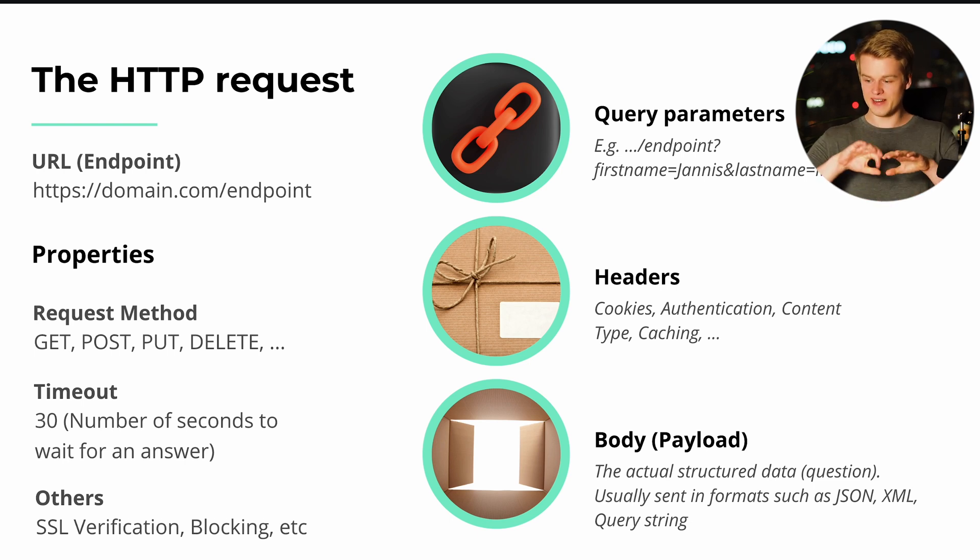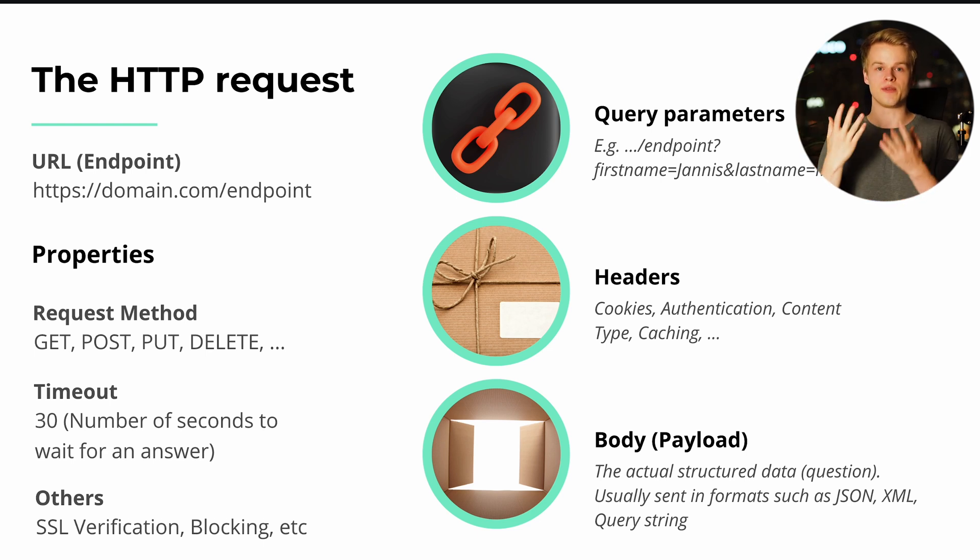This is literally the whole bundle of a request. On one hand you have the endpoint URL — where you send the stuff, like the receiving robot. Then you have properties defined beforehand: how long to wait for an answer, whether you need an answer at all, what method to use, and where to send it. And then you have the headers and payload for actually delivering the content, along with the specifications that tell the receiver how to interpret the data.